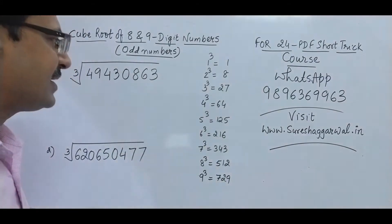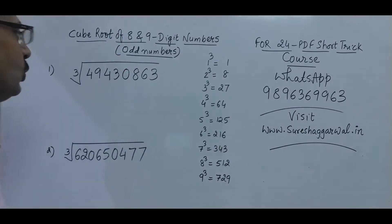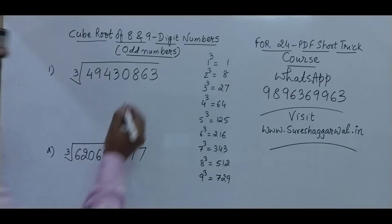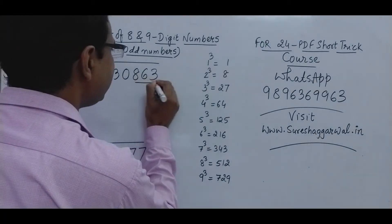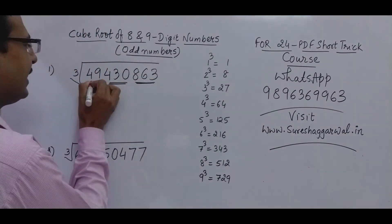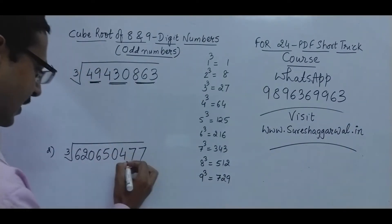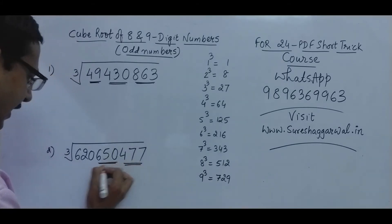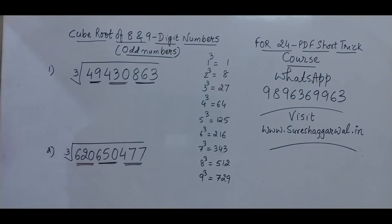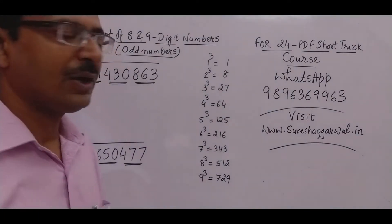Now I'm demonstrating the method. Make triplets from the right-hand side: 863 is a triplet, 430 is a triplet, and we are left with 49. It doesn't matter if we are left with one, two, or three digits in the first group — it can be a doublet or a triplet in the first place.